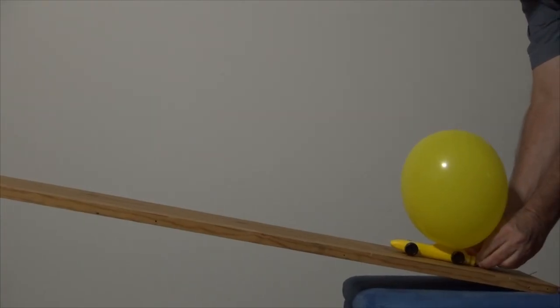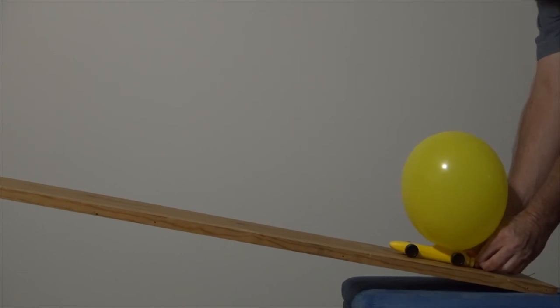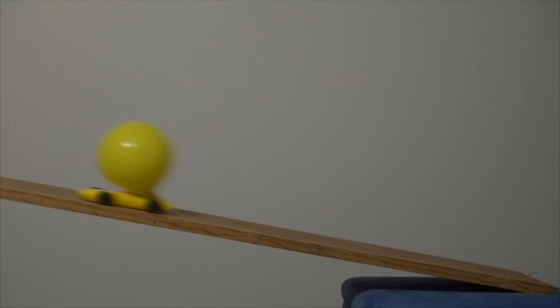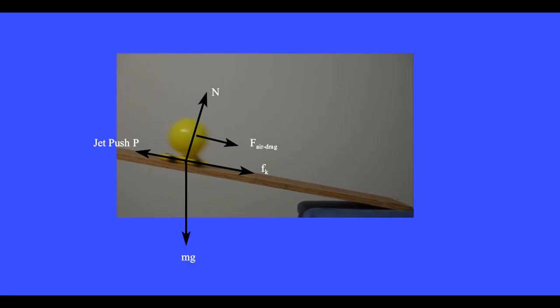Jet propulsion pushes this car up the inclined plane. Please press pause to identify the secret invisible forces acting on this car. There is the downward weight, the normal force, the jet push up the incline, the air drag force, and the kinetic frictional force down the incline. Notice that the mass of the car plus balloon and its air is decreasing in time, and the drag force changes in time as the velocity increases and the area decreases.